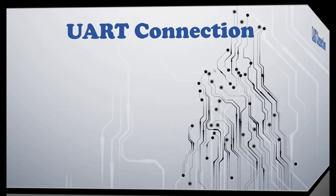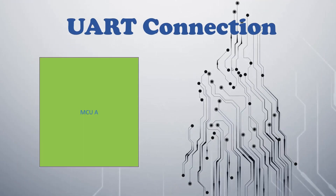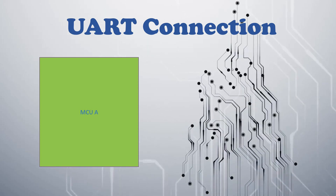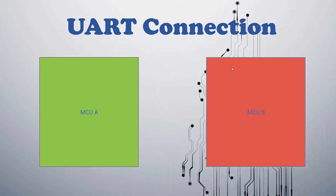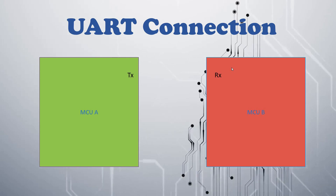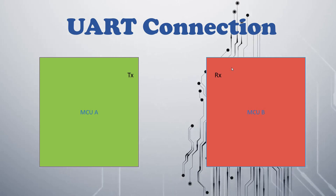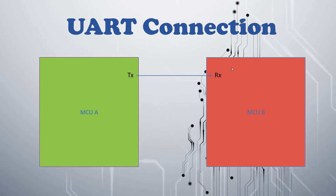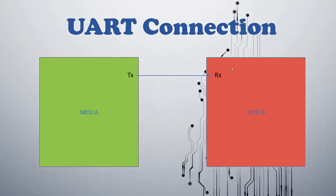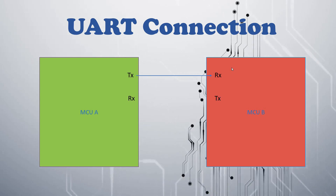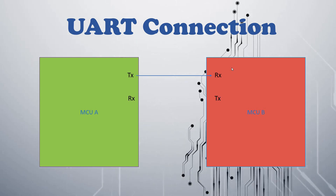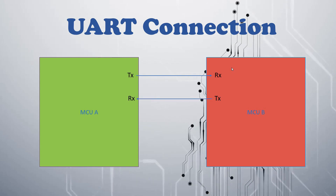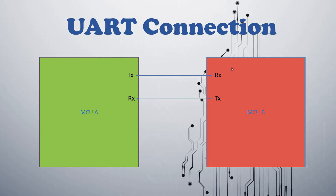This is the UART connection between MCU A and MCU B. MCU A's TX is connected to MCU B's RX, and MCU A's RX is connected to MCU B's TX. They also share a common ground.